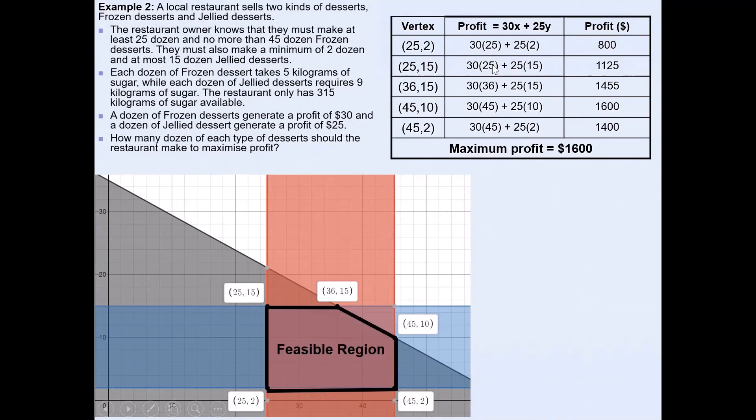So now I'll use these vertices and substitute this in the objective function and see which one gives the maximum profit. So I suggest if you could pause the video and work this out quickly yourself and see if your answer matches with these. So in this case, as you can see, if I go, so remember this 25 represents the x value and 2 is the y value. So make sure you substitute it in the right spot. So 30x means 30 times whatever x is. So 30 times 25 plus 25 times the y value and y coordinate here is 2. So 25 times 2 gives you 800 dollars. Likewise you fill in the rest and work it out.